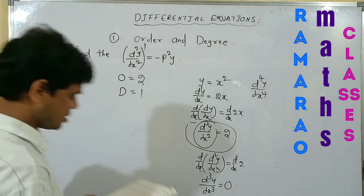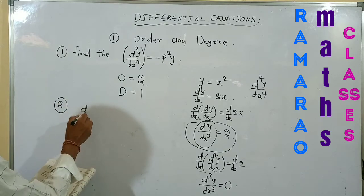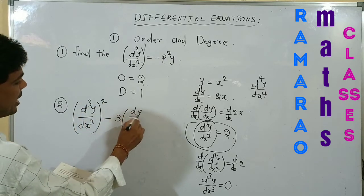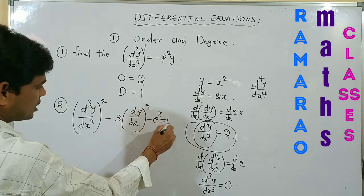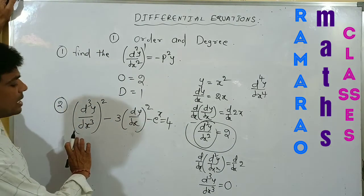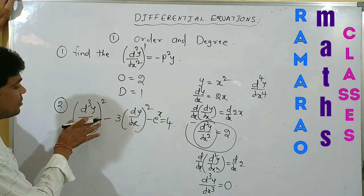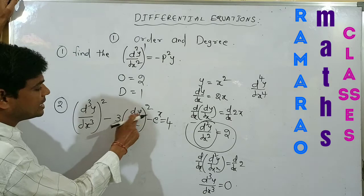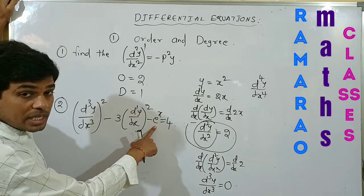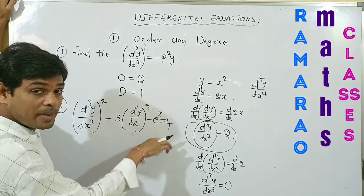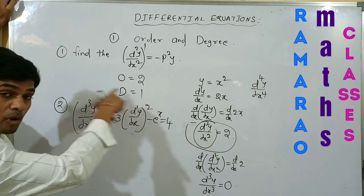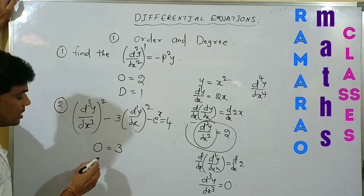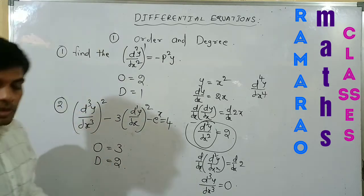Question number 2: (d³y/dx³)² - 3(dy/dx)² - eˣ = 4. Observe here — this is a polynomial differential equation. d³y/dx³ is the third order derivative and dy/dx is the first order derivative. The highest order in this polynomial is 3, so order = 3. The power of the highest order term is 2, therefore degree = 2.